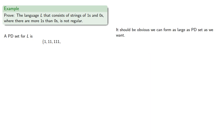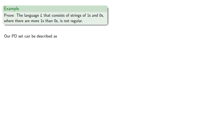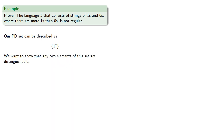It should be obvious that we can form as large a pairwise distinguishable set as we want — but let's prove it, since things that are obvious are often the things most necessary to prove. Our pairwise distinguishable set can be described as 1*, the set of all strings that consist of 1s. We want to show that any two elements of this set are distinguishable, and we'll do this in two ways. First, we'll prove it directly.